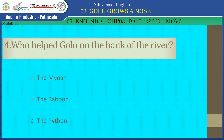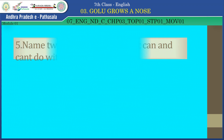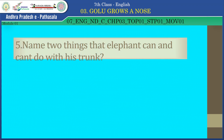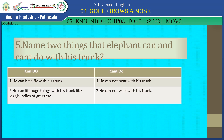Question number 5: Name two things that an elephant can and cannot do with his trunk. Things an elephant can do: he can hit a fly with his trunk; he can lift huge things like logs, bundles of grass, etc. Things an elephant cannot do: he cannot hear with his trunk; he cannot walk with his trunk.